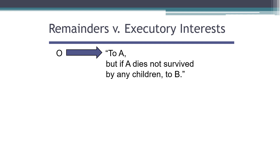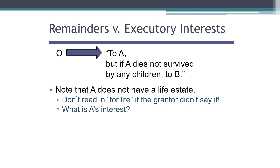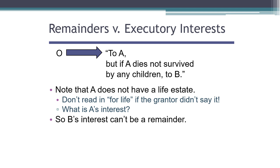Let's take a look at this example: To A, but if A dies not survived by any children, then to B. Notice first of all that A does not have a life estate. It doesn't say 'to A for life,' and we don't read in the words 'for life' if the grantor didn't say them. So what is A's interest if it's not a life estate? The answer is it's a defeasible fee estate — a pretty reasonable answer because it's possible that A's interest will last forever. If A does have children surviving him, then A's interest becomes a fee simple absolute and will last indefinitely. As originally given, it's a fee simple, but it is defeasible on the condition that A dies without any children surviving him. In that event, it passes to B. So B's interest, because it's following a defeasible fee rather than a life estate, can't be a remainder.